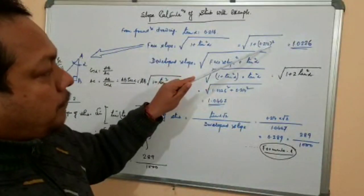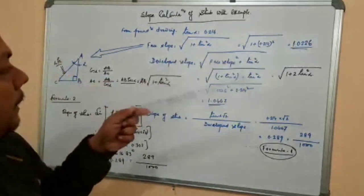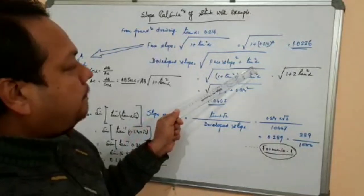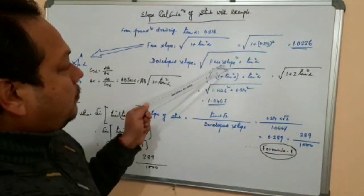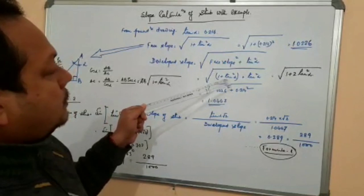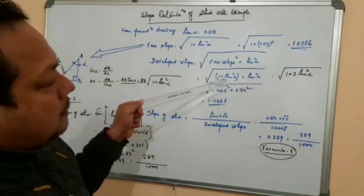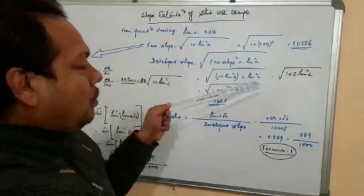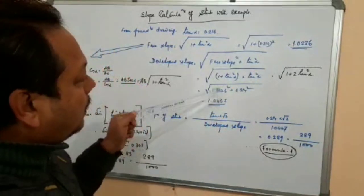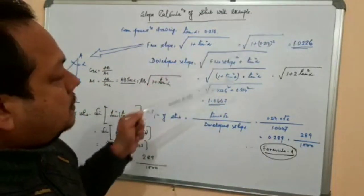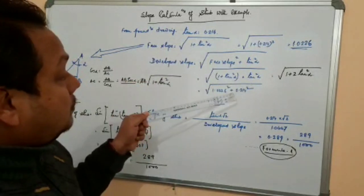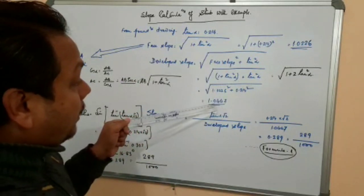The next figure is developed slope. The formula is: root over (phase slope² + tan² alpha). Since phase slope is root over (1 + tan² alpha), squaring it gives (1 + tan² alpha), so the expression inside becomes (1 + tan² alpha + tan² alpha). Calculating: root over (1.0226² + 0.214²) gives a developed slope of 1.0447.